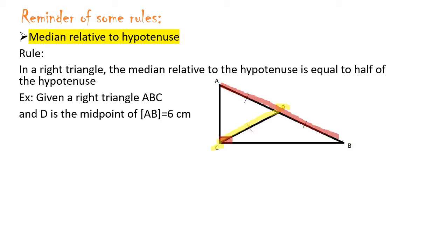In triangle ABC, if D is the midpoint of AB and AB is 6 centimeters, then CD — which is the median — equals AB over 2, which is about 3 centimeters.